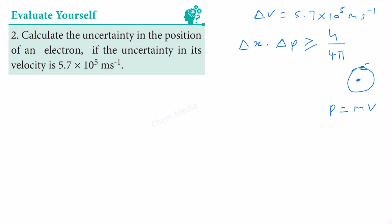Therefore, delta p we can write as m times delta v. So we can say that delta x times m times delta v is greater than or equal to h divided by 4 pi.